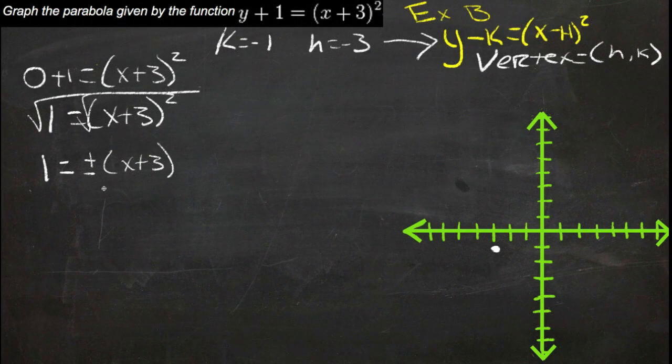Now since our two choices are positive x plus 3 and negative x plus 3, either way, we could divide both sides by that sign. So we really could solve x plus 3 equals positive or negative 1.